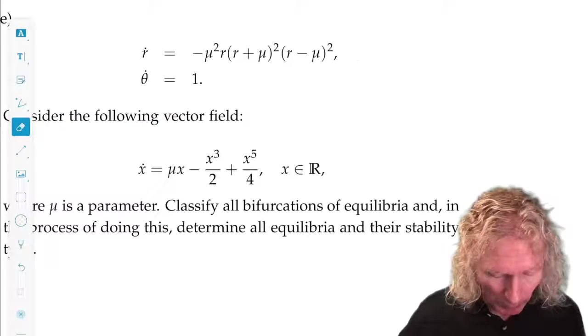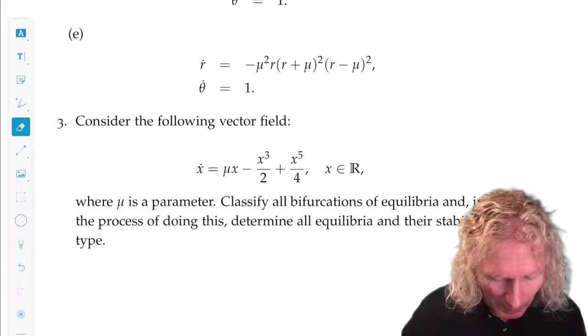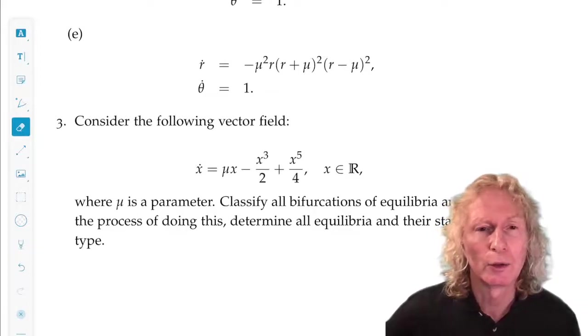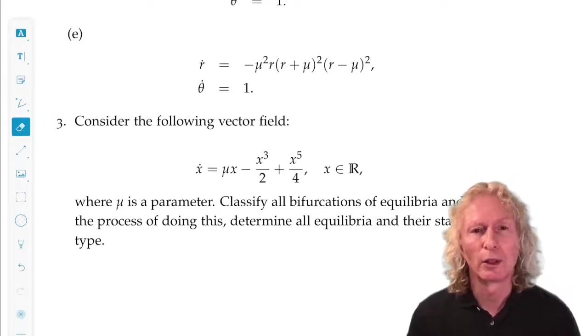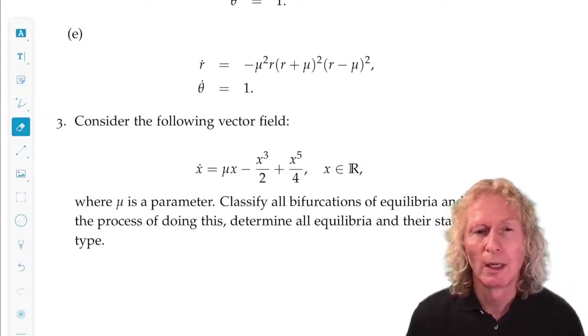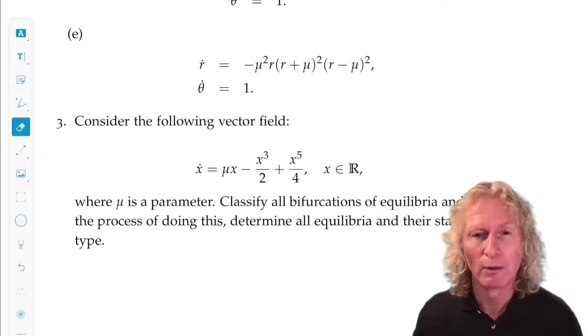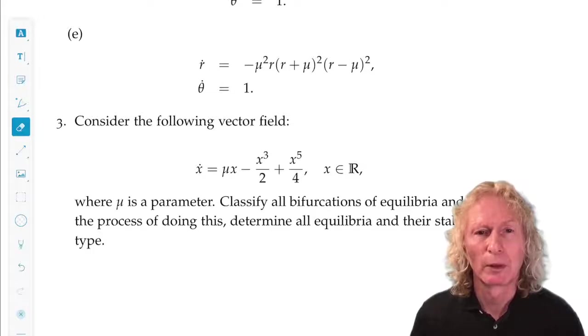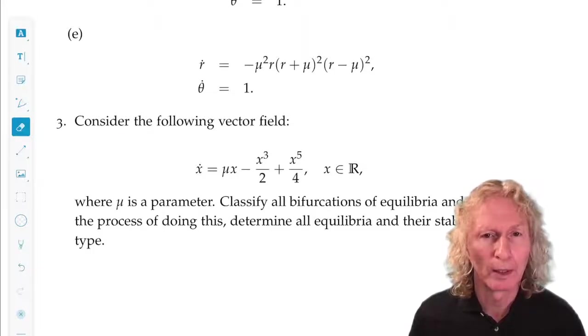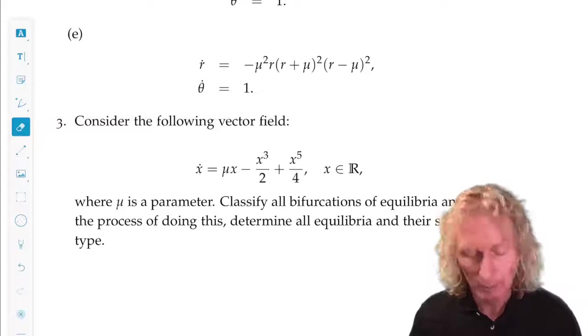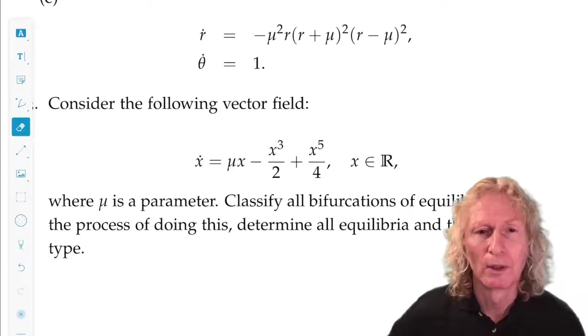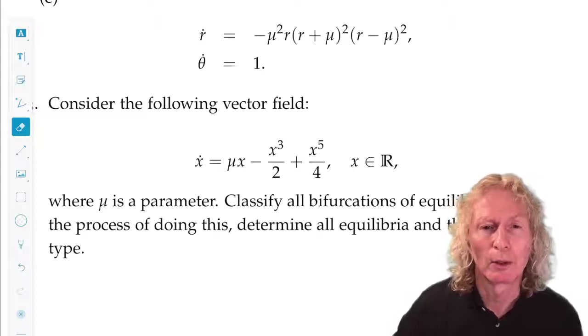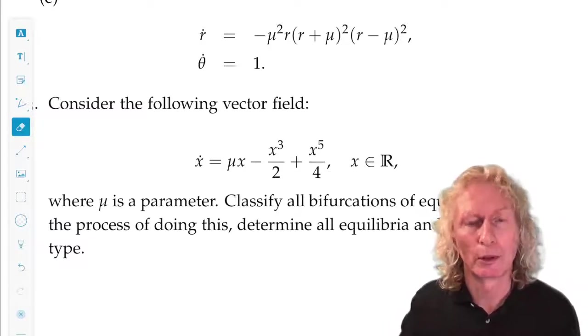And then in problem three, problem three is in the same spirit as the final two examples that I considered at the end of the chapter, where I wanted to illustrate a single parameterized family that could have multiple types of bifurcations. So in the first one, it had two saddle nodes, and the second one had a saddle node and a pitchfork. And see what you get by doing a similar analysis for this particular vector field.